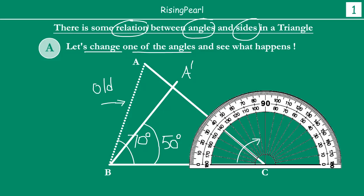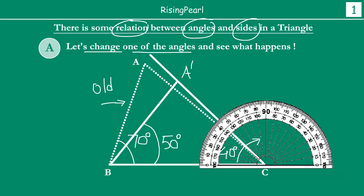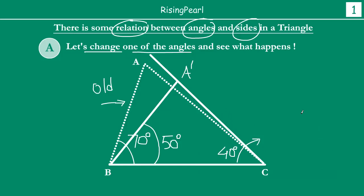If you were to measure angle C originally, angle C initially was 40 degrees — 30, 40, 50. So this angle originally was 40 degrees and now we need to expand angle C. It is now almost 45 degrees. So our new angle C is actually 45 degrees.